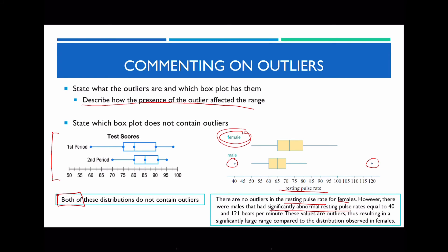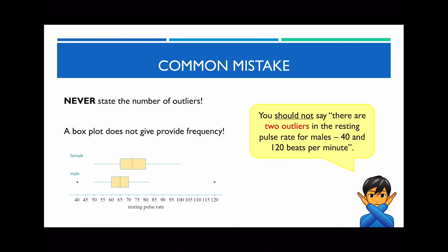A common mistake students make is saying 'there are two outliers in the data set' — that is wrong. A box plot doesn't tell you how many data points are in the data set; it only shows you the five-figure summary. Although there are two points shown, this doesn't mean there are exactly two outliers. Technically, there could be five outliers with the value of 120, but we don't draw five circles — we just represent that as one single dot indicating those are the outlier values. Please do not say 'there are two outliers' — you will be automatically incorrect.